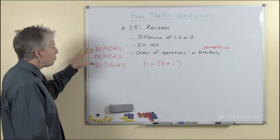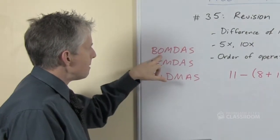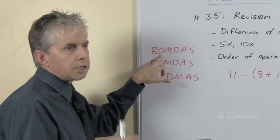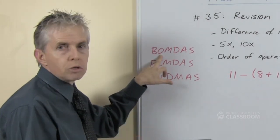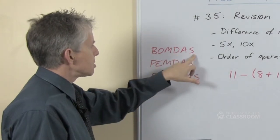So in Australia we commonly use one called BOMDAS which stands for brackets. The O can stand for all sorts of things, other operations or orders, or of strangely, multiplying, dividing, adding and subtracting.